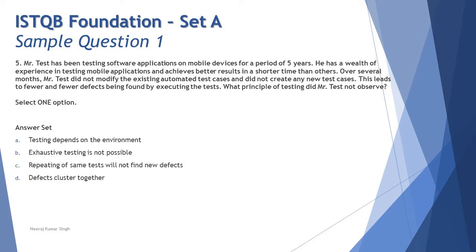Though the scenario is not complex, there will be a lot of information which is not at all required to be read, and there will be that simple information which will tell you the exact answer. Let's look at the question right now. Mr. Test has been testing software applications on mobile devices for a period of five years. He has a wealth of experience in testing mobile applications and achieves better results in a shorter time than others. Over several months, Mr. Test did not modify the existing automated test cases and did not create any new test cases. This leads to fewer and fewer defects being found by executing the tests. What principle of testing did Mr. Test not observe?